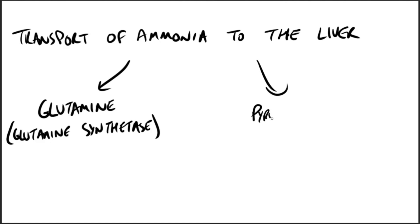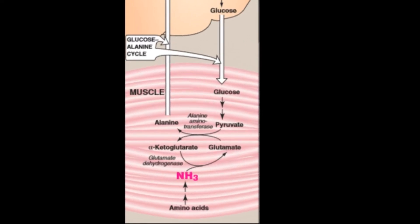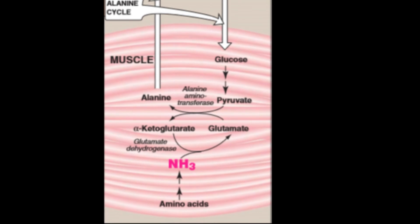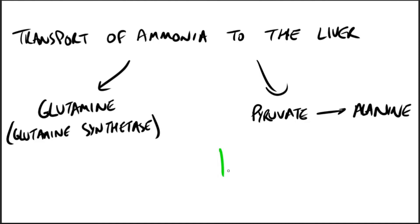The second transport mechanism, used primarily by muscle, involves transamination of pyruvate to form alanine. Alanine is transported by the blood to the liver, where it is converted back to pyruvate by transamination. In the liver, the pathway of gluconeogenesis can use the pyruvate to synthesize glucose, which can enter the blood and be used by muscle — a pathway called the glucose-alanine cycle.